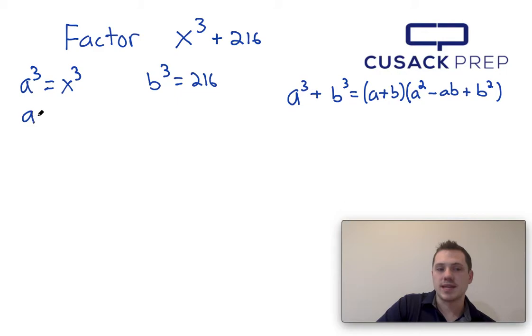Once I know a cubed is x cubed, then I know a is x. If I know b cubed is 216, then taking the cubic root of both sides, I can determine that b is 6.